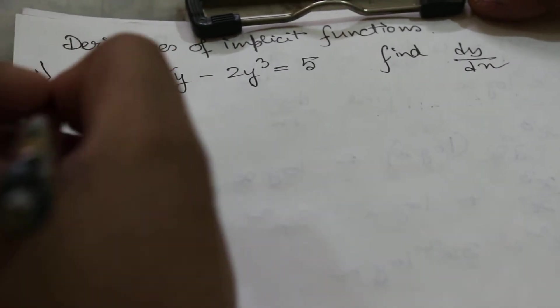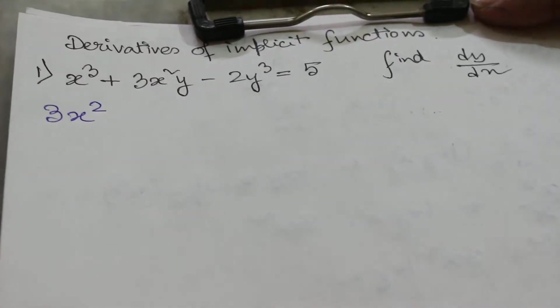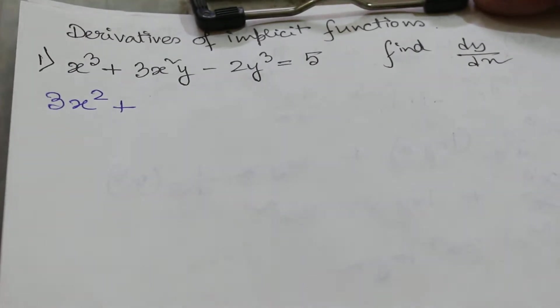So we will start differentiation from x³. Differentiation of x³ with respect to x is 3x². Now we will solve this in UV method.